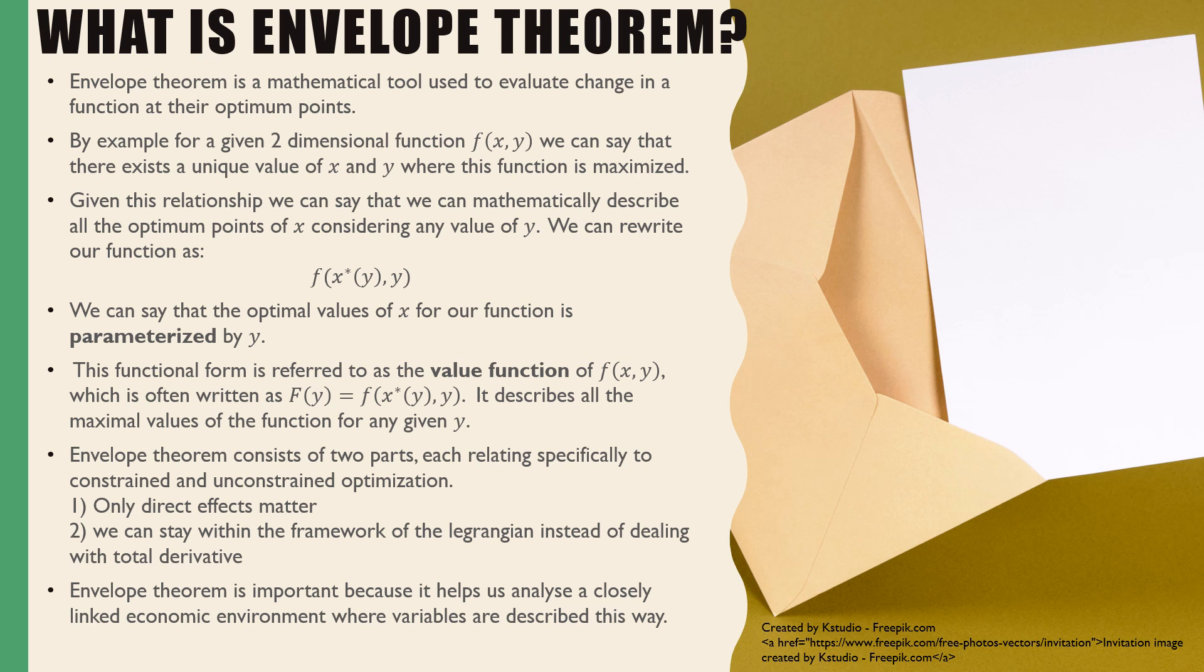We can say that the optimal values of x for our function is parameterized by y. This functional form is referred to as the value function of f(x,y), which is often written as capital F(y) = f(x*(y),y). It describes all the maximal values of the function for any given y.